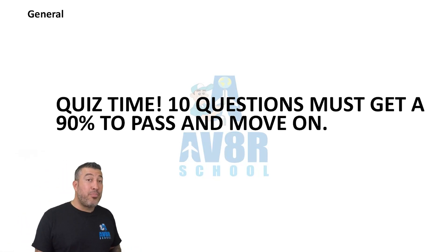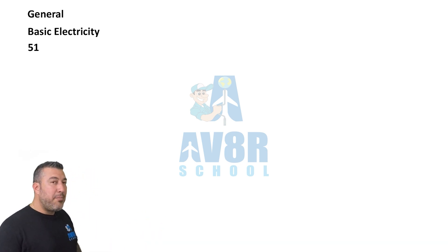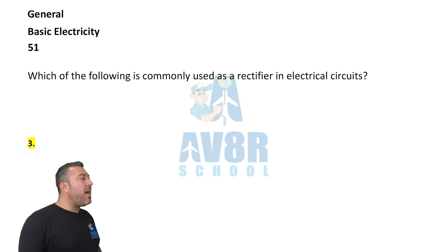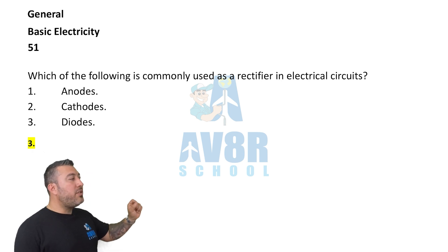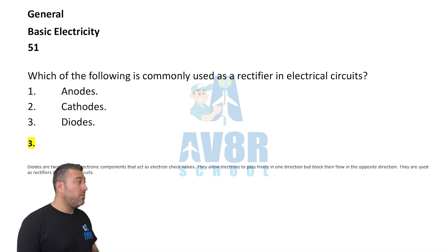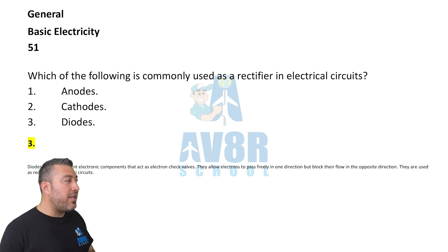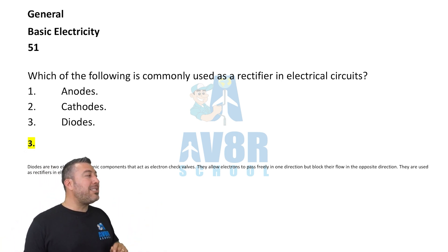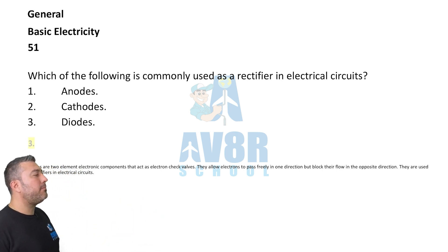Hey guys, welcome back. Basic electricity, question 51. Which of the following is commonly used as a rectifier in electric circuits? The answer is three — diodes. Diodes are commonly used as rectifiers in electrical circuits.